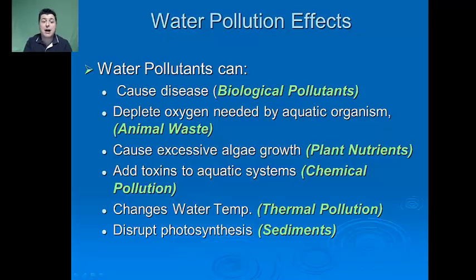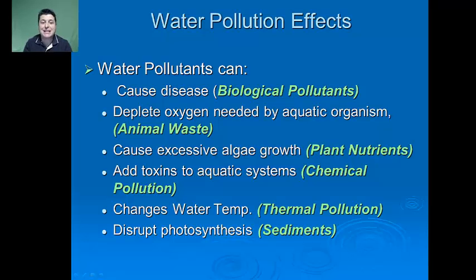Pollutants can deplete how much oxygen is available in the water through decomposition. Animal waste is consumed by bacteria, which helps cleanse the water, but as a result the bacteria suck up oxygen necessary for other organisms to live. Plant nutrients from fertilizer — excess phosphates and nitrates — can cause excessive algal growth. When excess plant nutrients come off agriculture or residential areas, that causes excess algal growth, which we call an algal bloom.